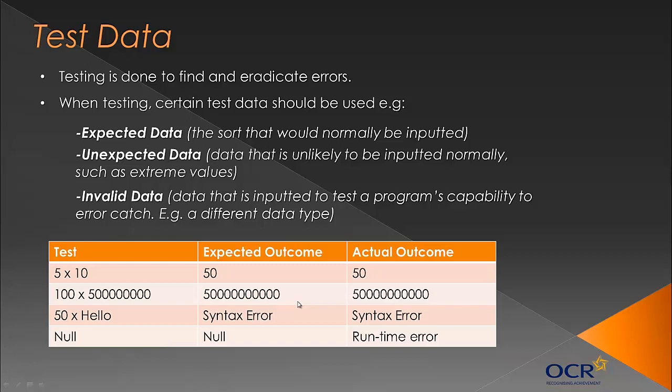This is especially useful when you're testing for logic errors, when you use a trace table, which is slightly different to this, but what this is showing, so this is like just a multiplication thing. And it's showing these three types of data that I talked about. There's also null.